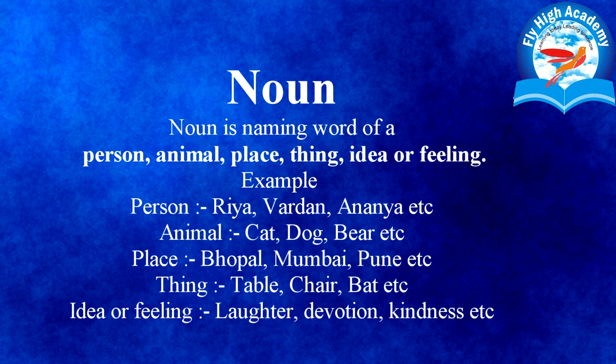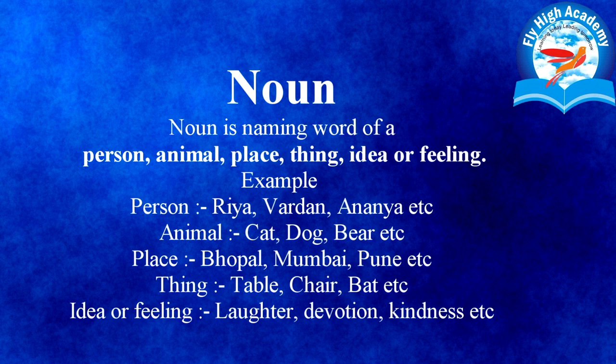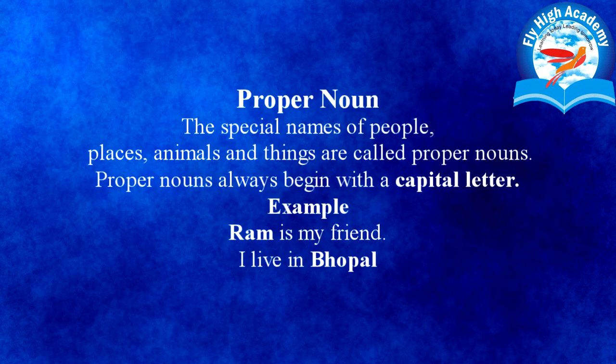Thing में आप किसी भी वस्तु का नाम लिख सकते हैं, जैसे table, chair, bed. Idea और feeling में आता है जैसे laughter, devotion, kindness. अब हम पढ़ेंगे types of noun. इस वीडियो में मैंने 8 प्रकार के noun को cover किया है।